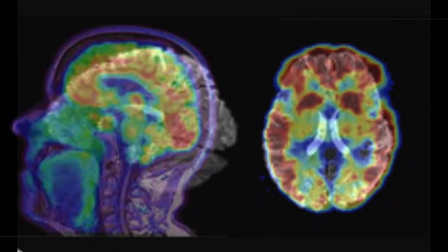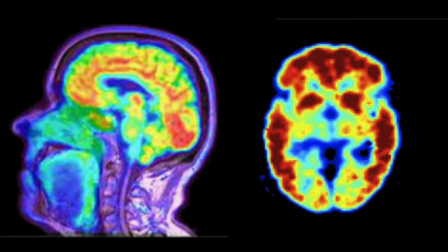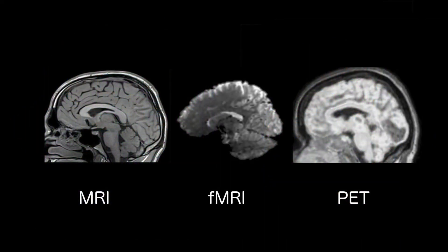Then we have a PET image. In this case, the image shows the areas in which a tracer is being metabolized. As you can see, the images can look really different, and they are also in different orientations in the field of view. And because of the differences in detail, it's really hard to find points of interest that can be accurate.